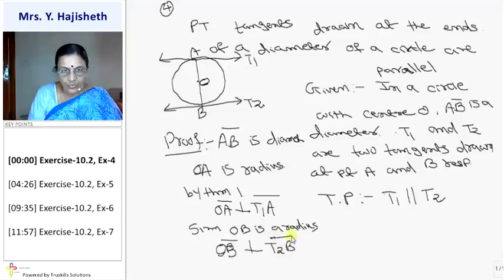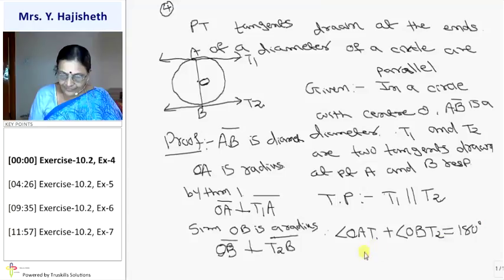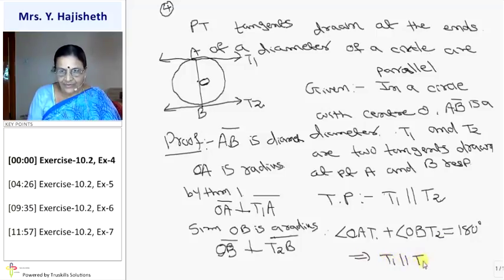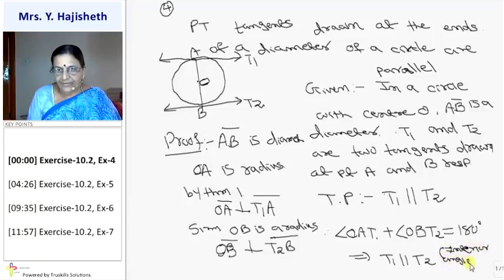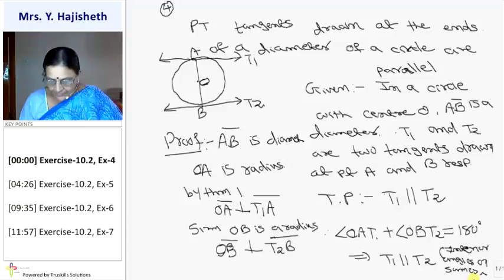So what can I say? Therefore, angle OAT1 plus angle OBT2 is equal to 180. That implies sum of two angles is 180, interior angles on same side 180. Then I can say that T1 is parallel to T2. Region is interior angle on same side. Two lines intersected by a transversal, and if interior angles on the same side are supplementary, then those two lines are parallel to each other.